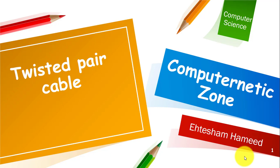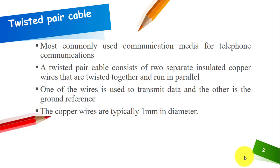That is twisted pair cable. Twisted pair cable is used in computer networks, especially in data transmission. Twisted pair cable is the most commonly used communication media for telephonic communication. It consists of two separate insulated copper wires that are twisted together and run in parallel.